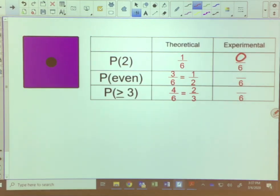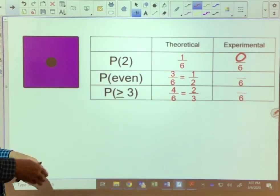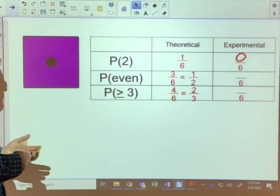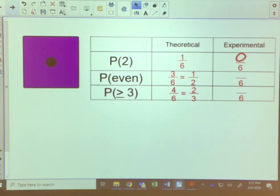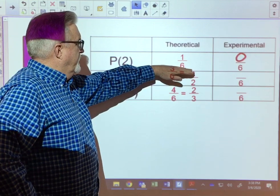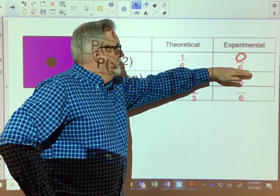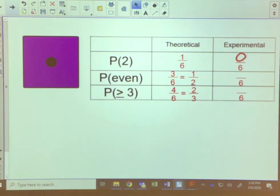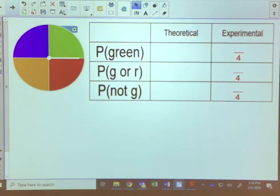So our experimental probability would be zero over six, versus one over six. Is experimental probability going to always be that way? No. If we kept doing it enough times, if we did this and kept trying trials, we would eventually get to where it might even out with the theoretical. But just doing it with six tries might not work.